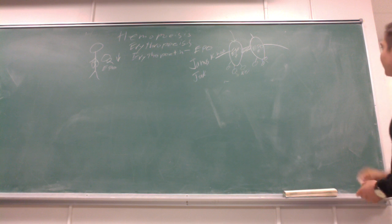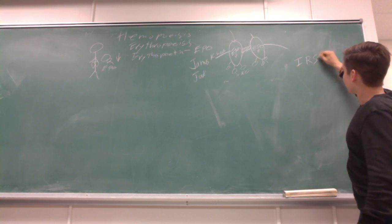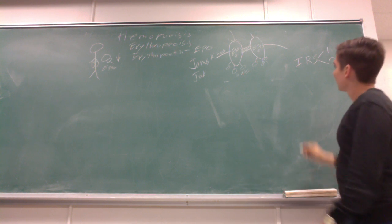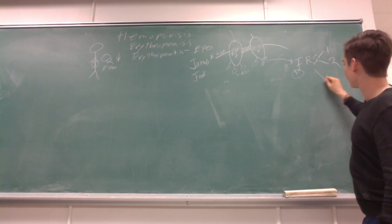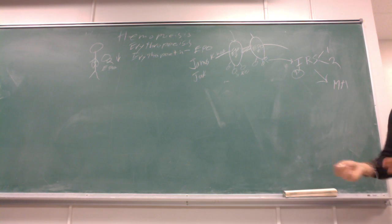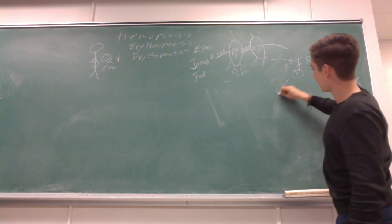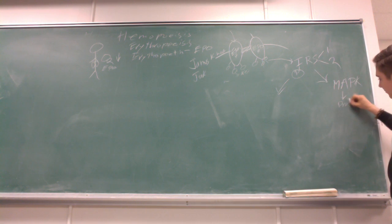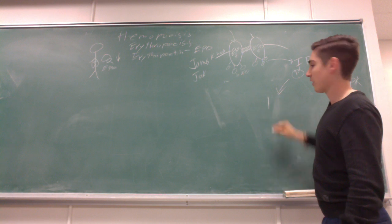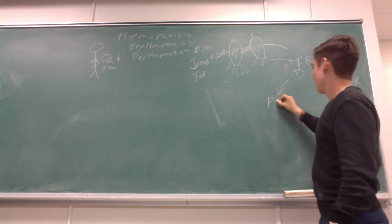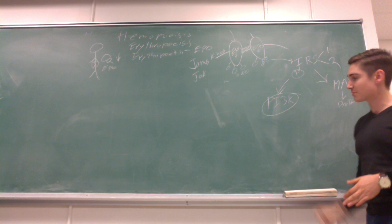When insulin binds, it also can form insulin receptor substrates, and there's both 1 and 2. These can become phosphorylated, which can go on to activate MAPK through the GRB2SOS complex for proliferation. And it can also activate another pathway.